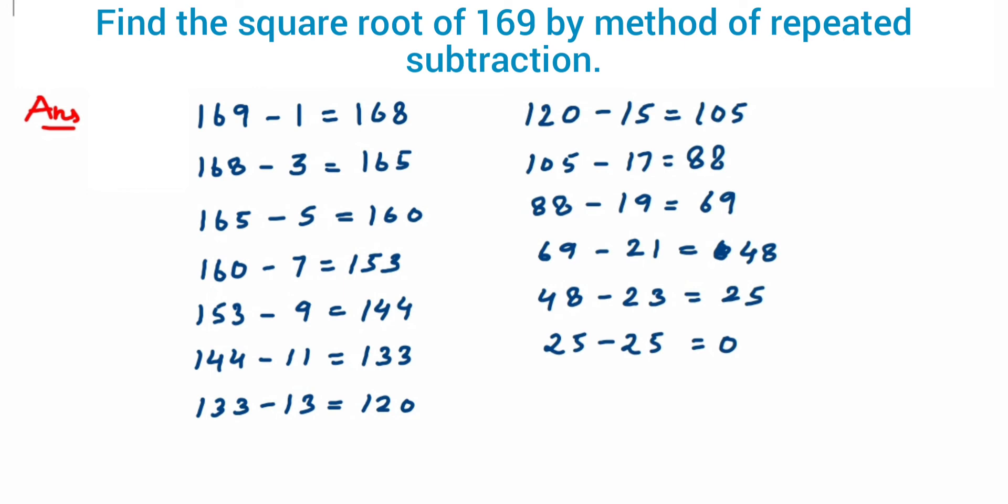Now after getting 0, we have to count how many odd numbers we have used. So when you count it, we are going to get total 13 odd numbers. So we have used 13 odd numbers and we got the answer 0 at the end, so the square root of 169 will become 13.